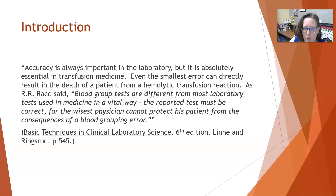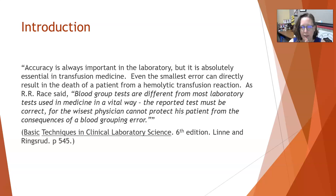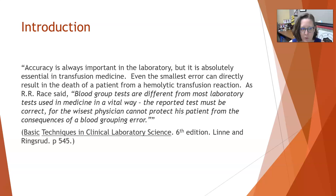Accuracy is always important in the lab, but it is absolutely essential in transfusion medicine. Even the smallest error can directly result in the death of a patient from a hemolytic transfusion reaction. This is the one department in the lab where if things are not done right, you can literally kill a patient. As RR Race said, blood group tests are different from most laboratory tests in a vital way — the reported test must be correct, for the wisest physician cannot protect his patient from the consequences of a blood grouping error.